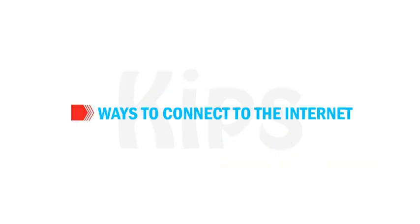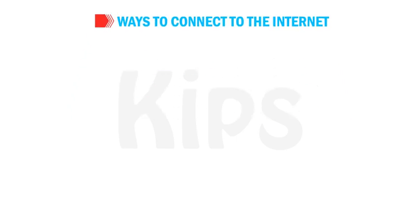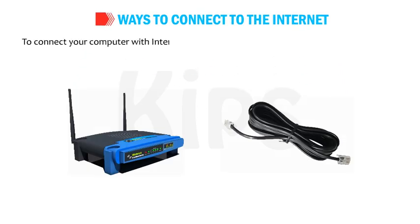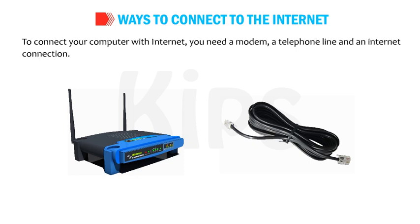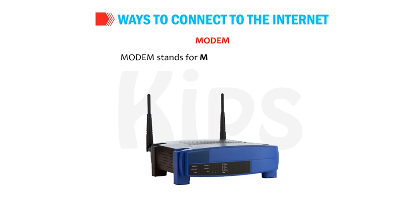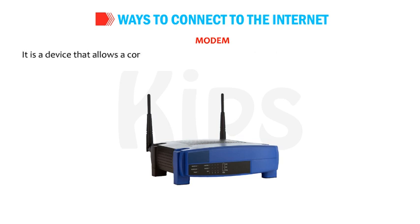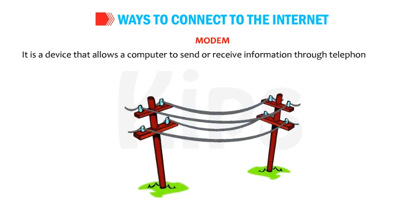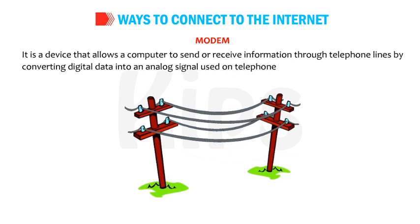Let me explain the ways to connect to the Internet. To connect your computer with the Internet, you need a modem, a telephone line and an Internet connection. Modem stands for Modulator Demodulator. It is a device that allows a computer to send or receive information through telephone lines by converting digital data into an analog signal used on telephone lines.